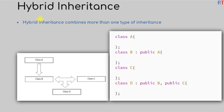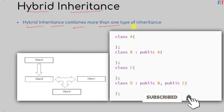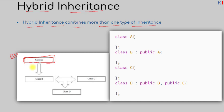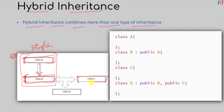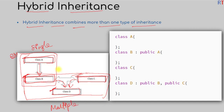In this video we're going to talk about hybrid inheritance in C++ programming. Hybrid inheritance combines more than one type of inheritance. For example, we have one parent class A inherited by subclass B — that's single inheritance. Then we have parent classes B and C both inherited by one class D — that's multiple inheritance.